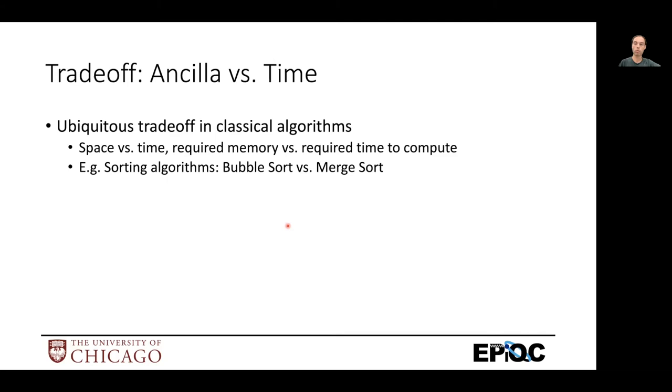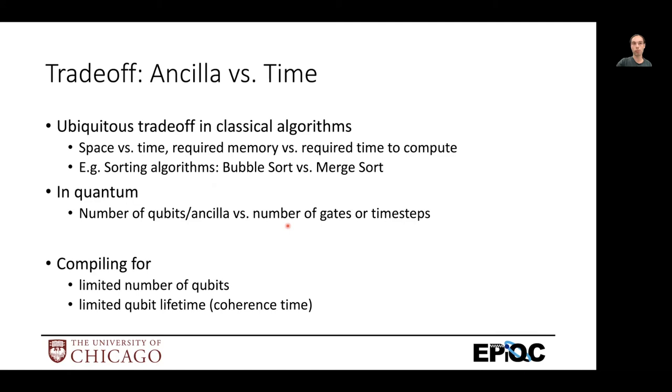And we have the same trade off in quantum algorithms where it becomes number of qubits or equivalently number of Ancilla versus the number of gates or the number of time steps. So this is a very important trade off because current devices and devices for a while will be limited number of qubits, but also limited in their lifetime or coherence time, how long we can actually do a computation for before errors overrun our results.